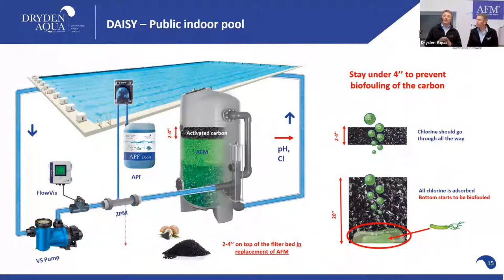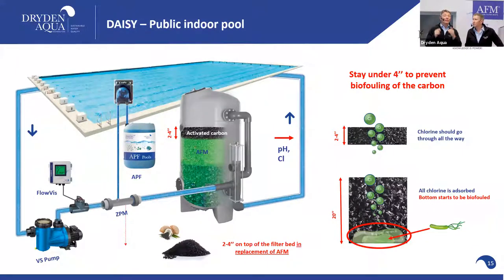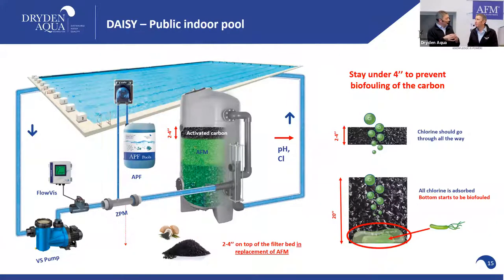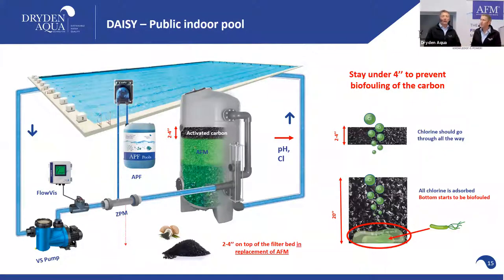What we recommend is just to go for a 2 to 4 inch small layer — only in public indoor pools on the AFM, if you want to be below 0.2 milligrams per liter of combined chlorines. If you're okay with 0.4 or 0.5, you don't have to mess with this, because our system will have no chlorine smell, but we have some organochloramines which are not toxic. But if the regulation requires below 0.2, you have to be below 0.2, and this is where we add this small layer.